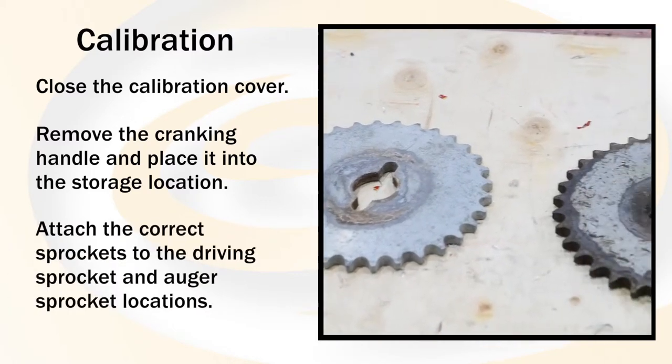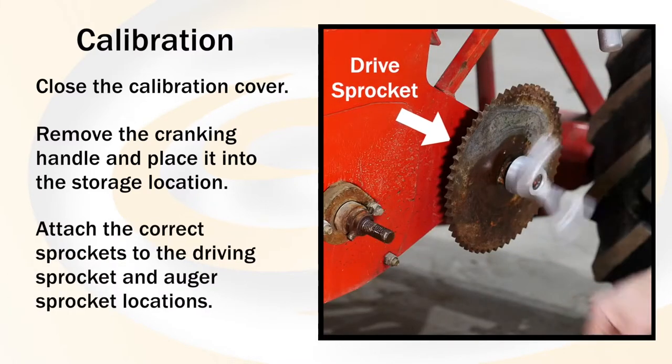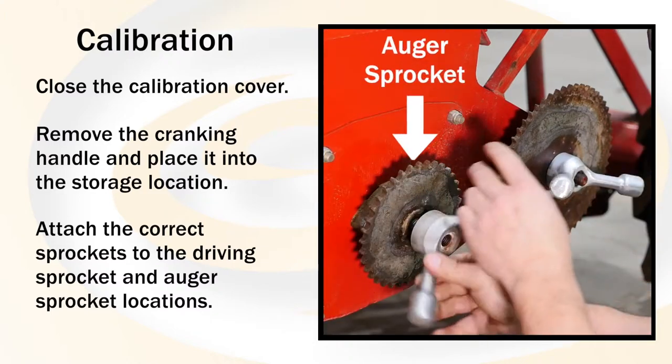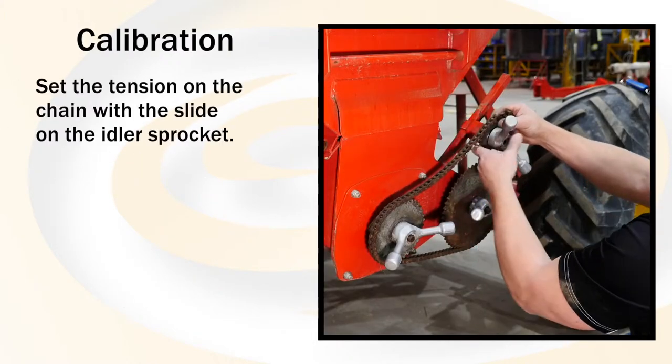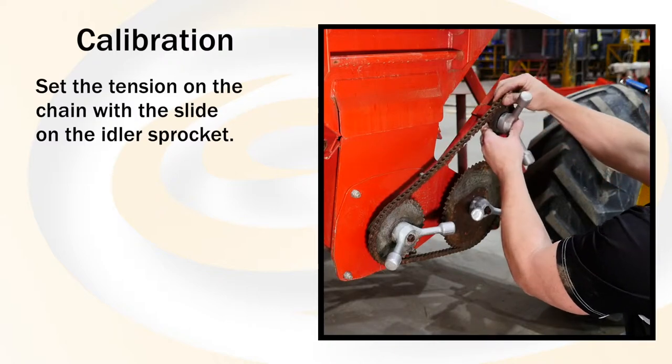Attach the correct sprockets to the driving sprocket and auger sprocket locations. Then set the tension on the chain with the slide on the idler sprocket.